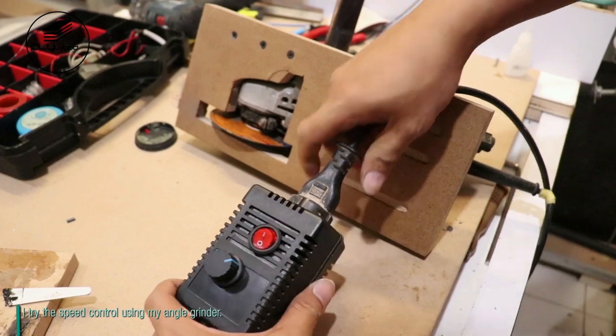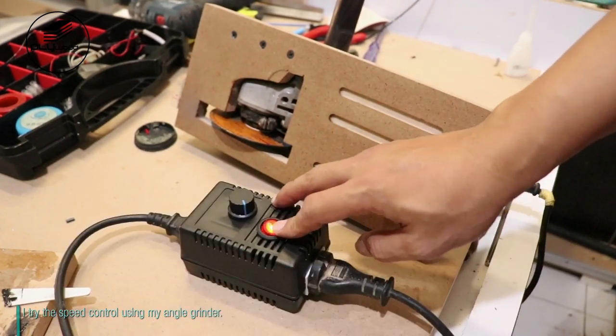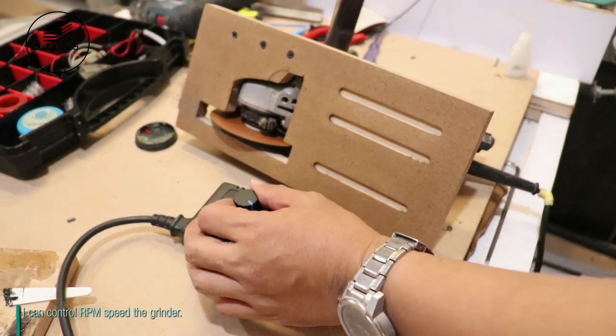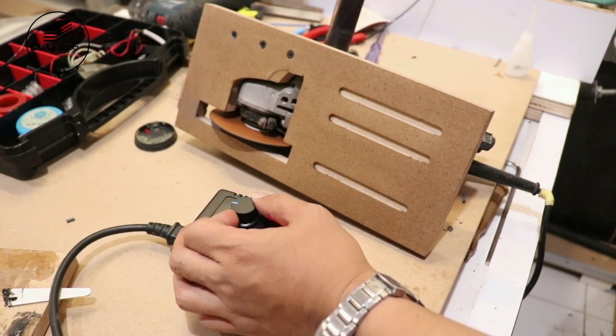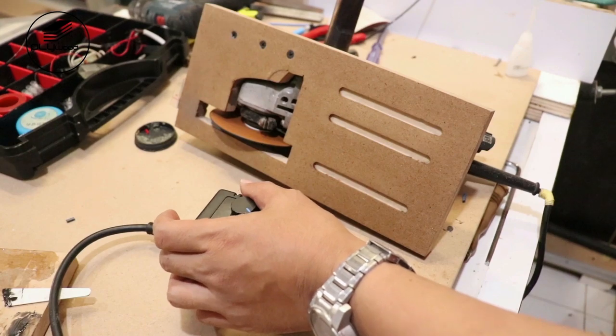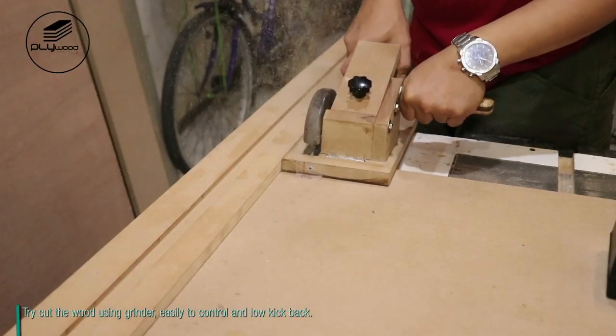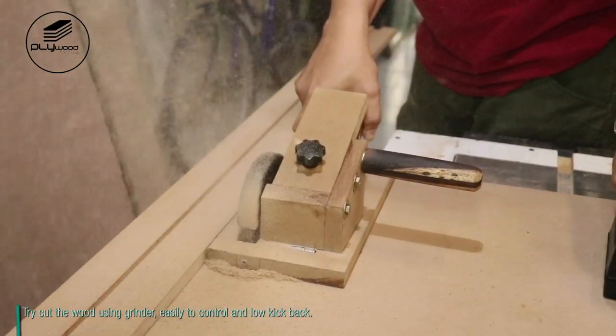I try the speed control using my angle grinder. I can control the RPM speed of the grinder. Try to cut wood using the grinder. It's easy to control and has low kickback.